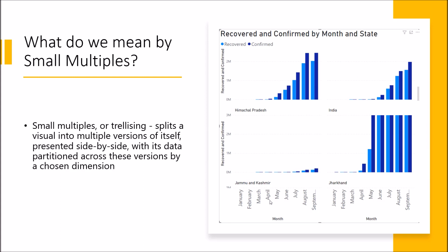Let's get started with the first part: what do we mean by small multiples in Power BI? Let's consider a real-life example of COVID-19. Here I have represented monthly data for recovered and confirmed cases for each individual state of India. Small multiples, or trellising, splits a visual into multiple versions of itself, presented side by side, with its data partitioned across these versions for a chosen dimension.